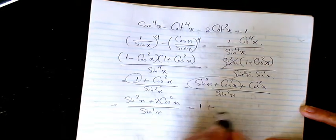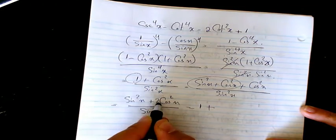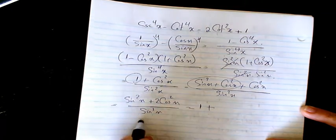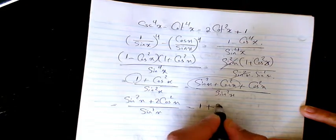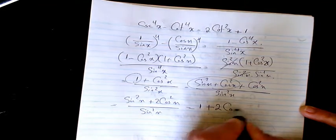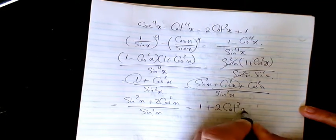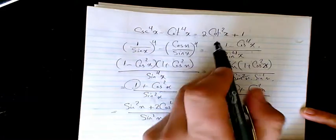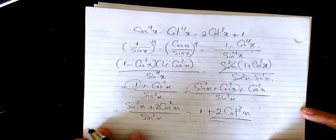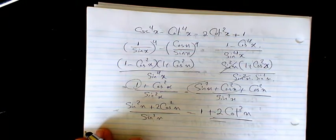Sine squared divided by sine squared equals 1, and then 2 cosine squared divided by sine squared equals 2 cotangent squared x. That's exactly what we see on the right-hand side.